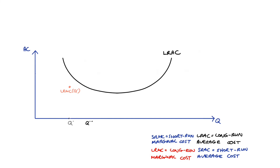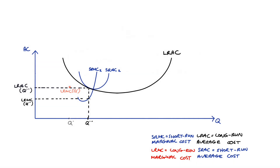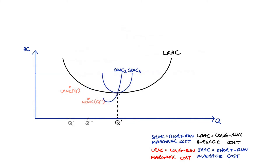We can take another point — maybe Q star star just here. I've taken away those previous curves for Q star. We'll add in our short-run average and short-run marginal cost curves, and again we can read that long-run marginal cost off that short-run marginal cost curve. This is how we construct the long-run marginal cost curve. Now there will be a point at the minimum of our long-run average cost curve — let's call that Q prime. At this point, the corresponding short-run average cost curve will be at a minimum as well, so the two curves will be tangent to one another. At this point, the marginal cost curves will be equal to the average cost curves, because marginal cost always intersects the minimum of average costs — and that's true for both the short-run and the long-run curves. So our long-run marginal cost for Q prime is the same as our long-run average cost for Q prime.